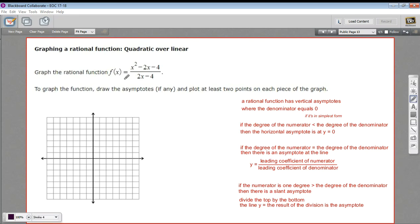In this problem, we're being asked to graph a rational function, and we've got x squared minus 2x minus 4 on top, 2x minus 4 on the bottom. Looks pretty complicated, but we can handle it.